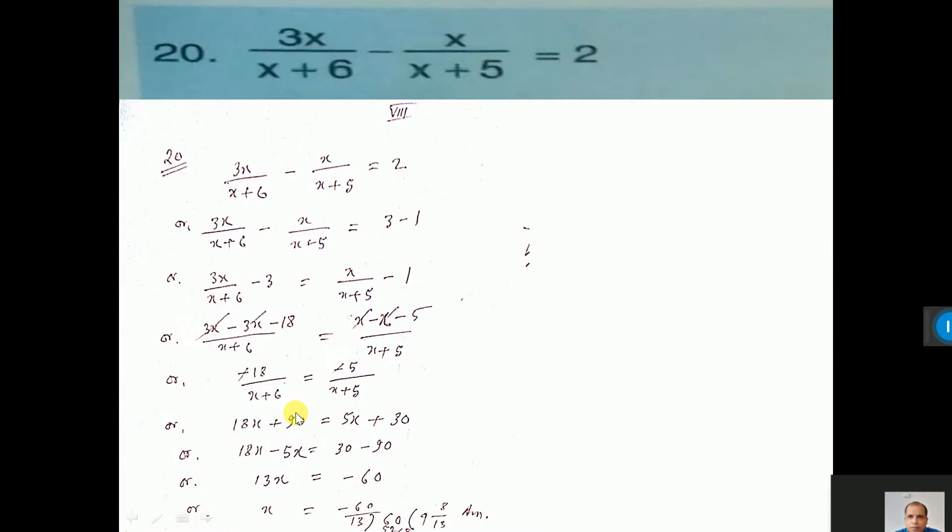See sum number 20. One special technique is there. 2 I can write 3 minus 1, that is 2. So this 3 I am giving here. This 3 with this term and this one I have taken right side.